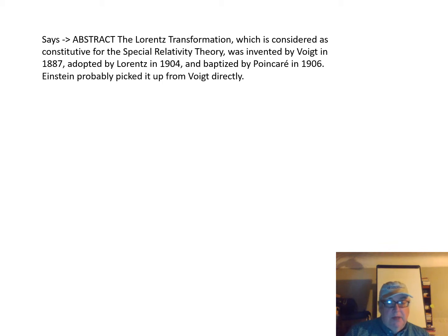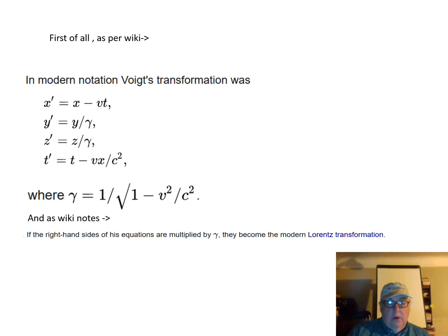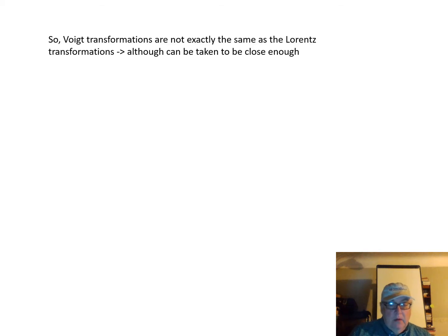Einstein probably picked it up from Voigt directly. As per Wikipedia, Voigt's transformations, where you multiply through by the gamma factor, look similar to the modern Lorentz Transformations on the right-hand side. However, Voigt's transformations are not exactly the same as the Lorentz transformations, although they can be taken to be close enough.